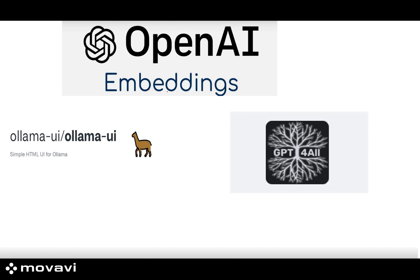OpenAI embeddings are paid — whenever you call any OpenAI embedding APIs, you need a license key and you have to pay for each chunk of data you perform embeddings on. However, there are many open-source alternatives available as well, like Ollama, GPT4All, and others.